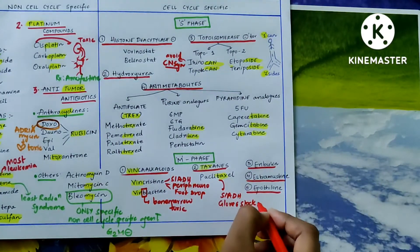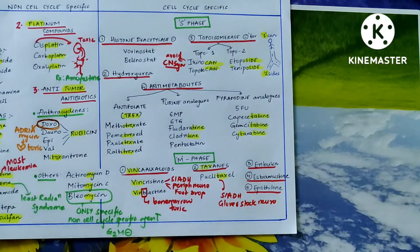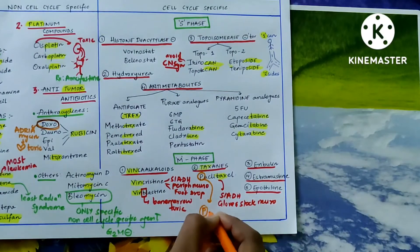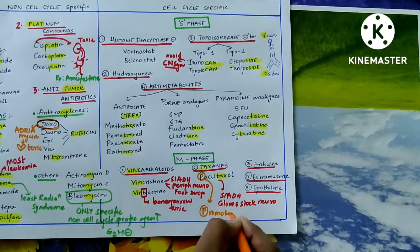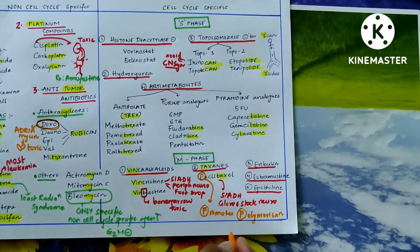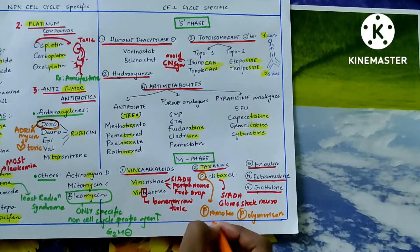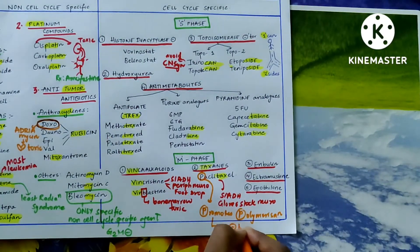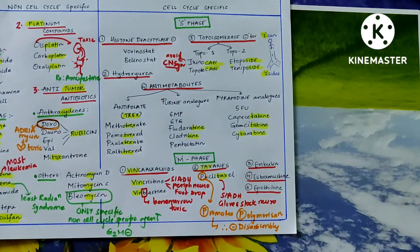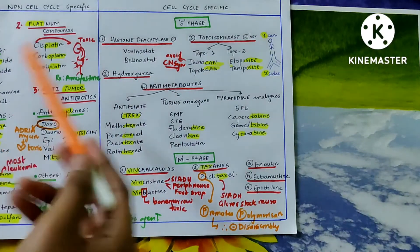Paclitaxel has 'p' in it, so it promotes polymerization. That means it inhibits the disassembly of mitotic spindles by promoting polymerization. This is the mechanism of action of paclitaxel.